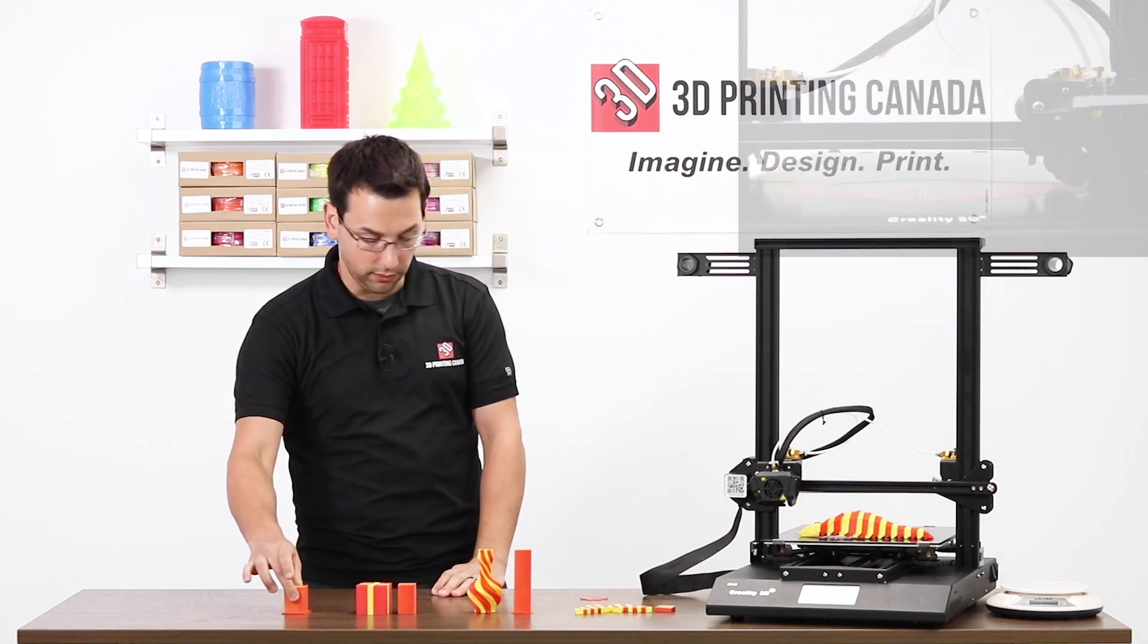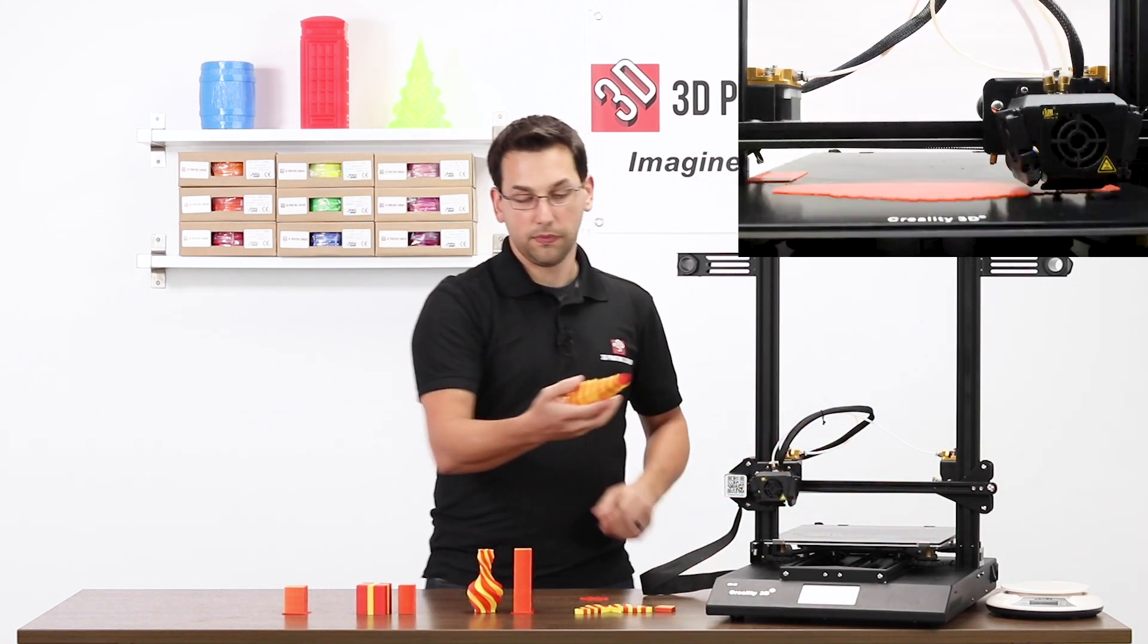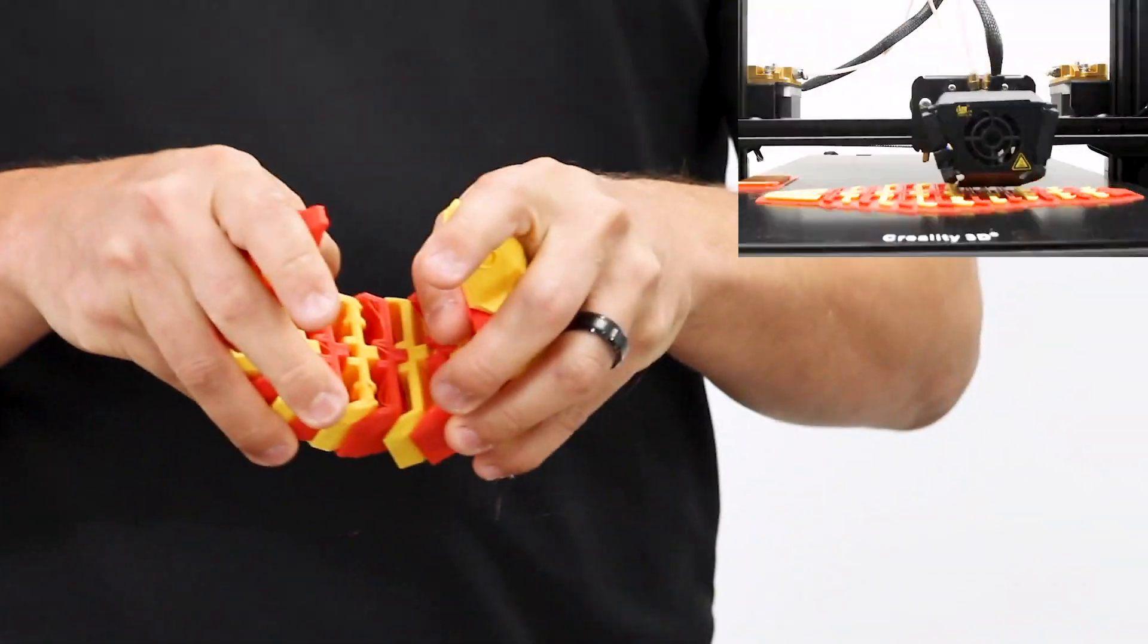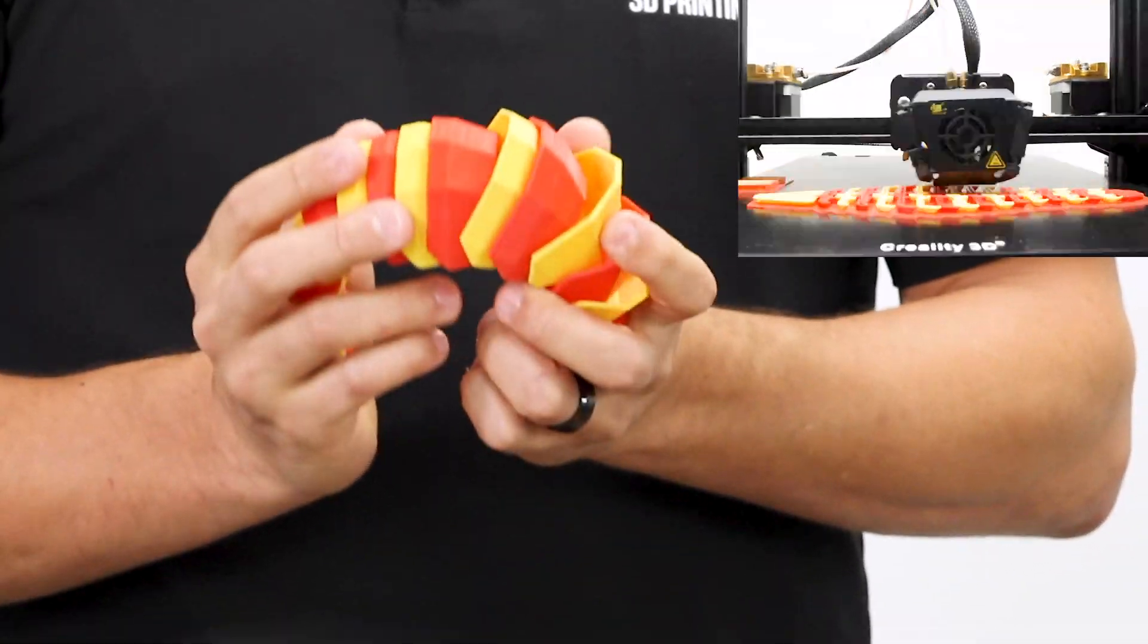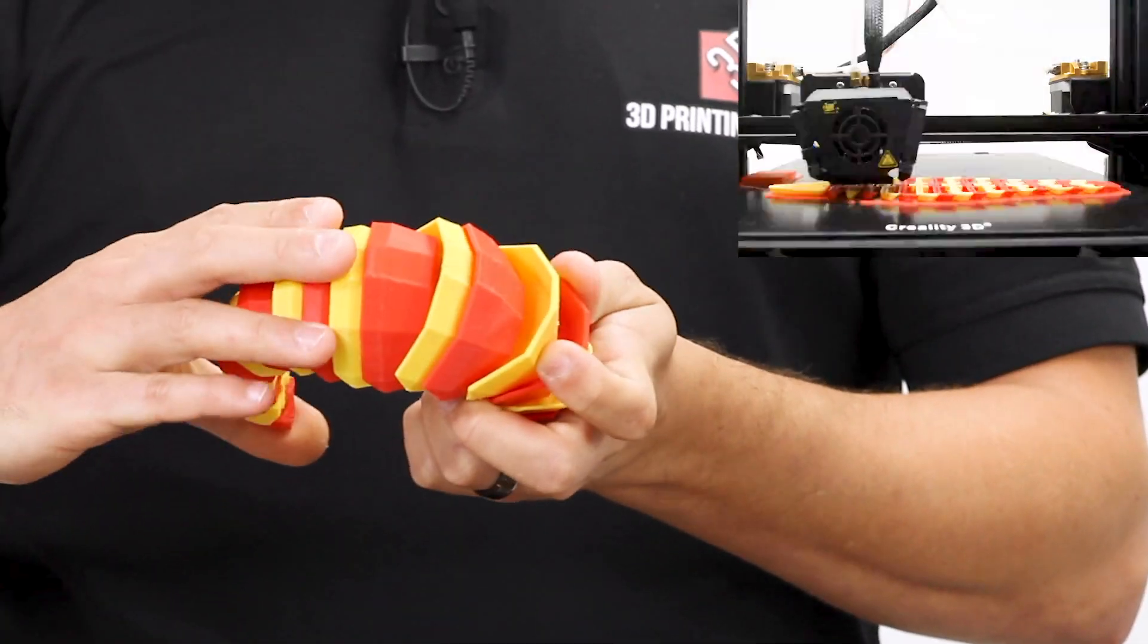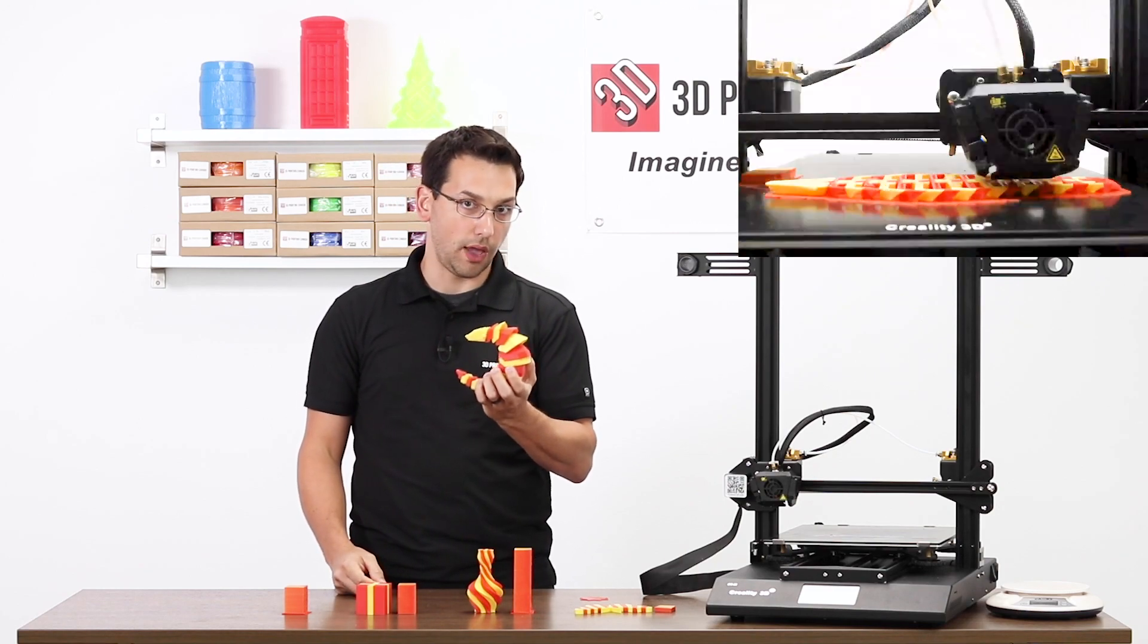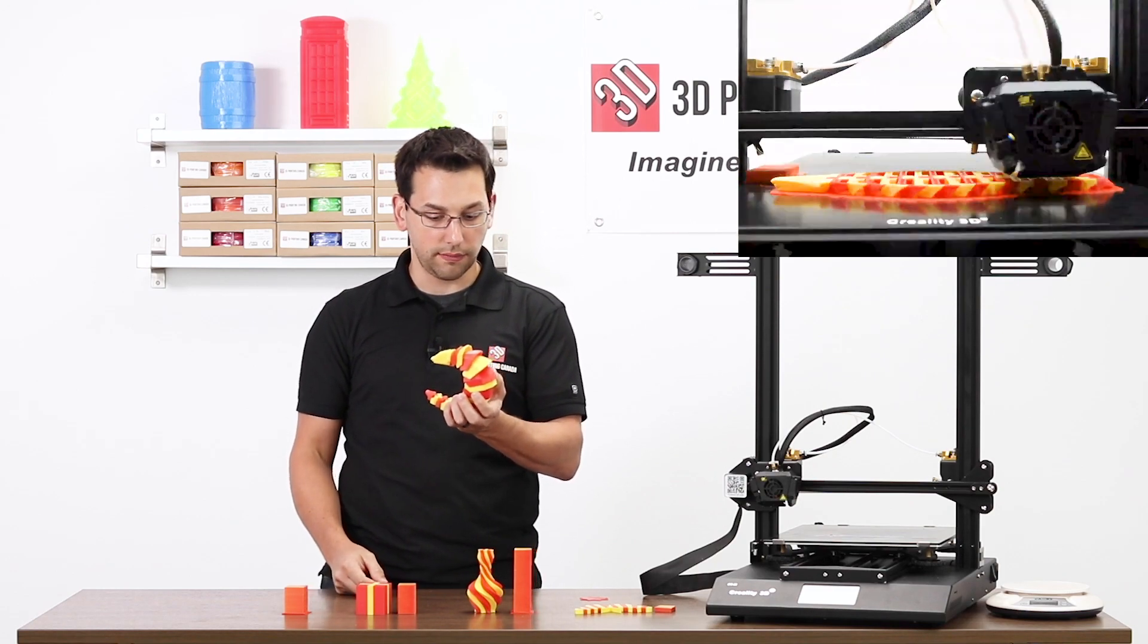And then this little guy is from the Pangolin. So this is the Pangolin model that you may have seen on Thingiverse from Arao, I think, A-R-A-O. Creality has taken it upon themselves to remove his name and add Creality 3D to the side of it.